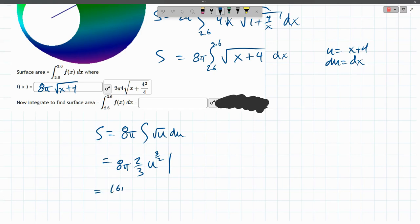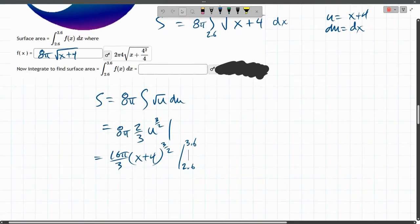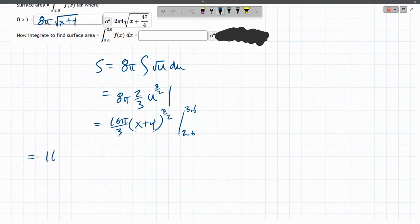8 times 2 is 16. π over 3. u is x plus 4 to the 3 halves power. Now we write our endpoints. And plugging these in. Everything's multiplied by 16π over 3.